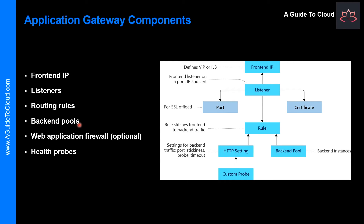A backend pool references a collection of web servers. You provide the IP address of each web server and the port on which it listens for requests when configuring the pool. Each pool can specify a fixed set of virtual machines, a virtual machine scale set, an app hosted by Azure App Service, or a collection of on-premises servers. Each backend pool has an associated load balancer that distributes work across the pool.